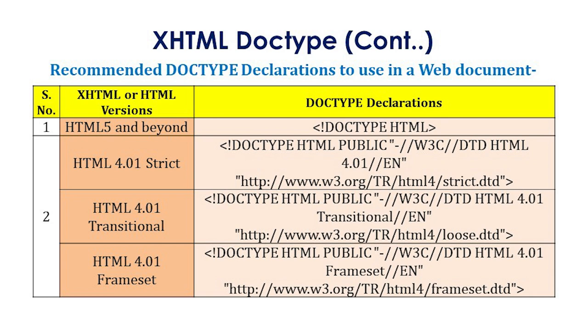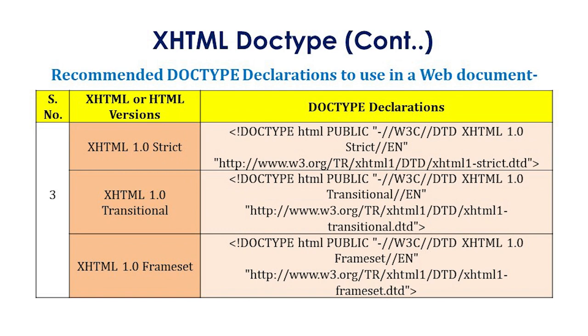You may go through the table for the correct doc type declarations. For the next set of versions — XHTML 1.0 Strict, XHTML 1.0 Transitional, and XHTML 1.0 Frameset — the corresponding doc type declarations are also mentioned in the table. I think you have gained a correct understanding from this tabular approach about doc type declarations for different versions of HTML and XHTML 1.0.